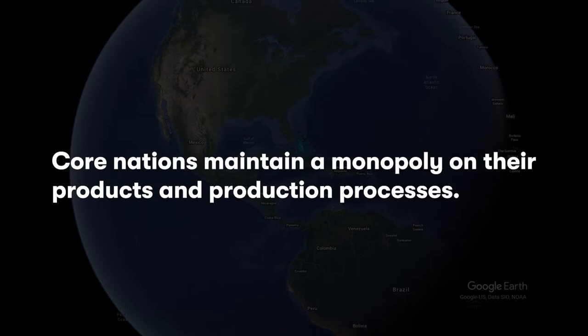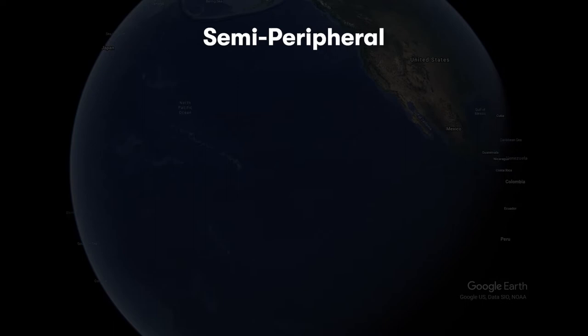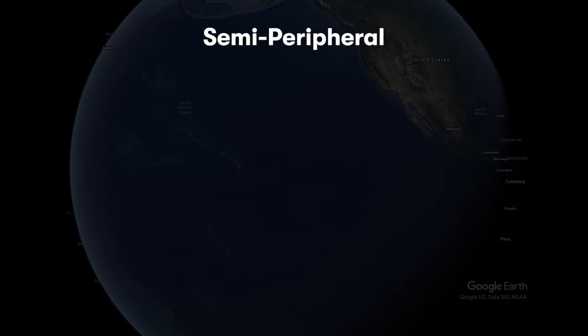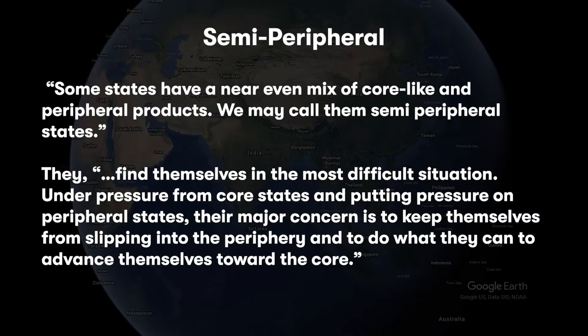The monopolized products and their production processes are more highly profitable. As for semi-peripheral nations, Wallerstein says: some states have a near mix of core-like and peripheral products. We may call them semi-peripheral states.